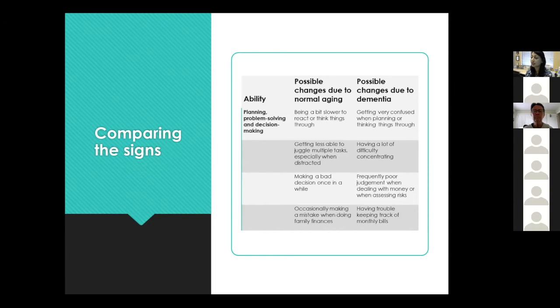So we'll talk about ability, planning, problem solving, and decision-making. Some possible changes due to normal aging, just being a little slower at reactions and thinking things through. Whereas a patient with dementia is getting very confused with planning or thinking things through. It becomes an overwhelming process for them. And so you will find that they are increasingly confused and increasingly anxious, and they may even become angry about things because somewhere deep inside, they know that things aren't the way that they need to be, but they don't know how to fix it.